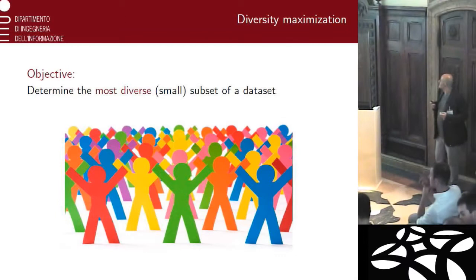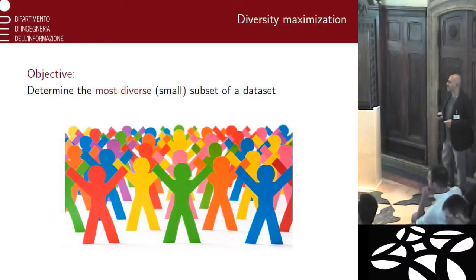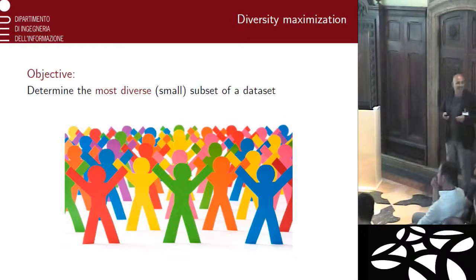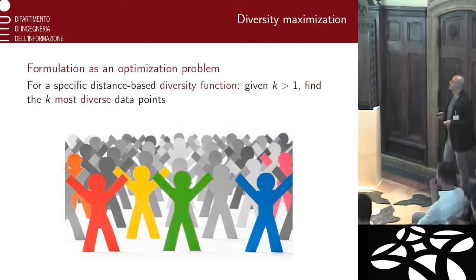What is diversity maximization? The idea is the following. We have a very large set of data coming from some space, and there is some distance that characterizes a pair of points in the dataset. We want to determine a very small subset of the dataset which is somehow the most diverse, according to some definition of diversity. Basically, we are looking for a summary — a very significant summary — in as much as it preserves diversity, this specific property of the dataset.